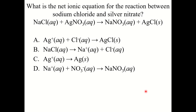What is the net ionic equation for the reaction between sodium chloride and silver nitrate? The correct answer is B: Ag+ + Cl− → AgCl. Both compounds can be broken apart into their ions. The spectator ions are sodium and nitrate, which cancel out, leaving silver plus chloride forms silver chloride as the net ionic equation.